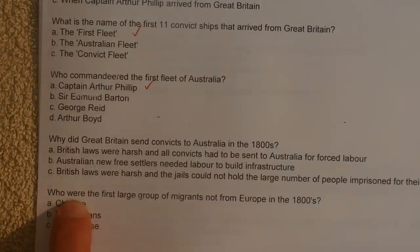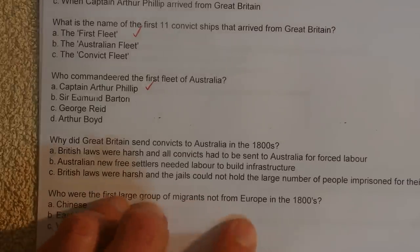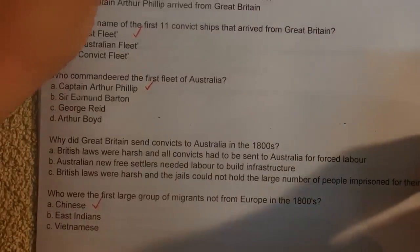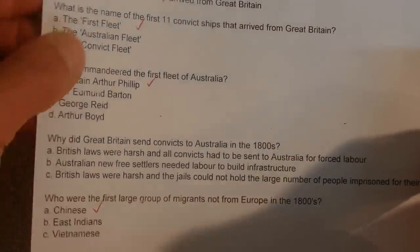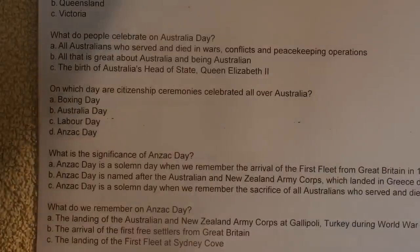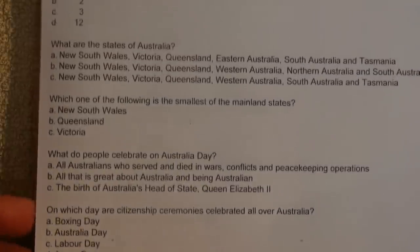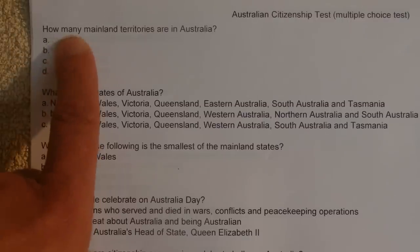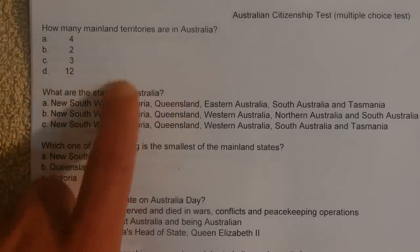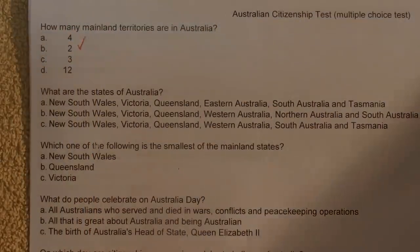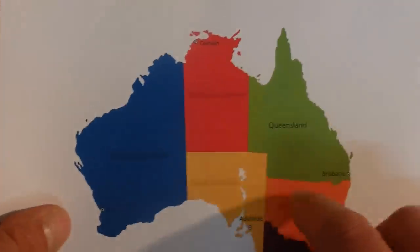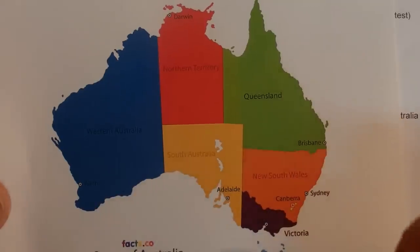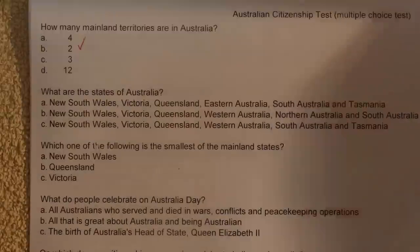Who were the first large group of migrants not from Europe in the 1800s? The Chinese — they came to Australia around 1850 onwards in search of gold, when gold was discovered in 1851. How many mainland territories are there in Australia? There are two: the Northern Territory and the Australian Capital Territory. So it's six states and two territories in Australia.